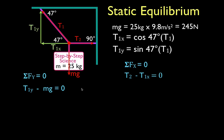So, let's do that first, and we'll do the y components first. T1y is simply sine of 47 times T1 minus mg. We know mg is now 245 newtons. So, I'm going to write that in. Sine of 47 times T1 minus 245 newtons.